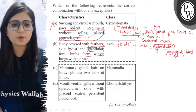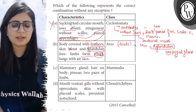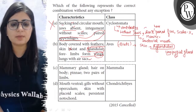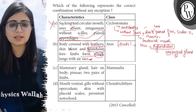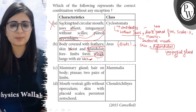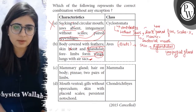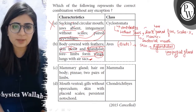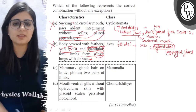Their four limbs are modified into wings, which is correct. Their lungs have additional chambers meant for enhancing the efficiency of respiration during flying, which is also correct. But the statement about moist glandular skin is wrong, so this statement is incorrect overall.